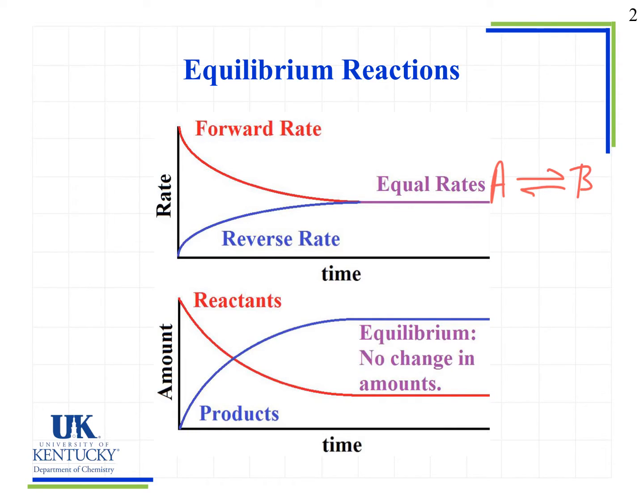When we look at the bottom graph, we see that the amount of products starts at zero and increases until it plateaus. The amount of reactants is high and it decreases again also until it plateaus.